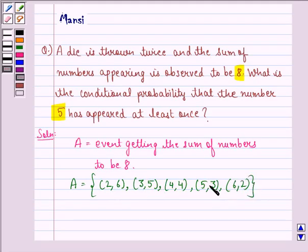Now, in each of them, the first digit represents the number that we get on the first die or die for the first time and this is for the second time.